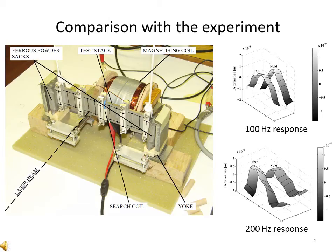An experiment featuring operating deflection shapes analysis was used to provide reference data for the numerical approach. Relatively good agreement was found in the case of variable magnetic excitation, materials with various magnetostrictive characteristics, and structures of different natural dynamics.